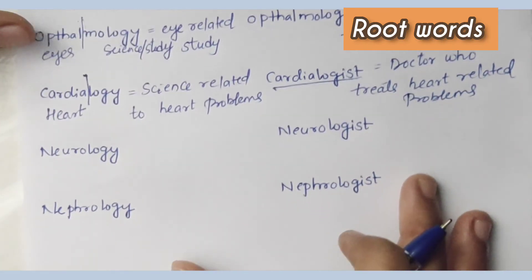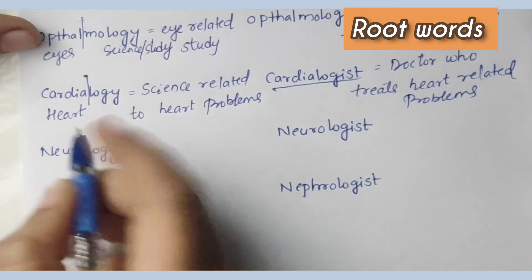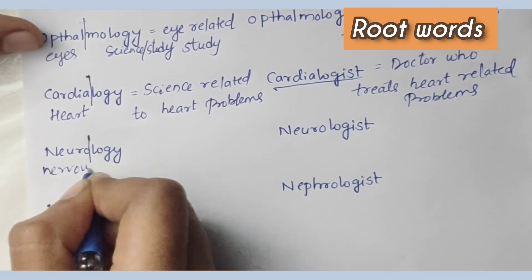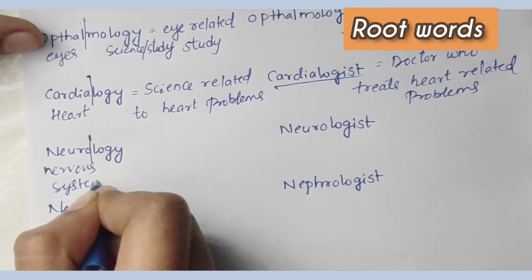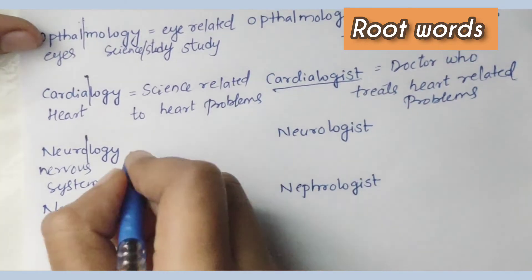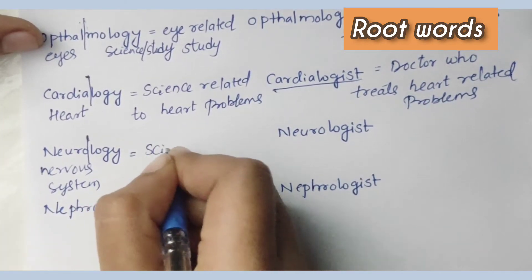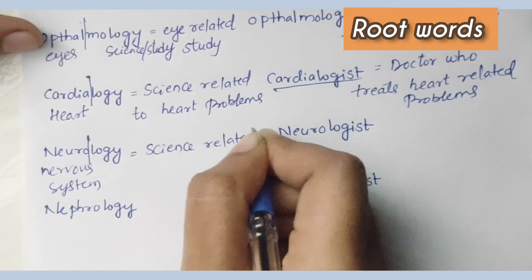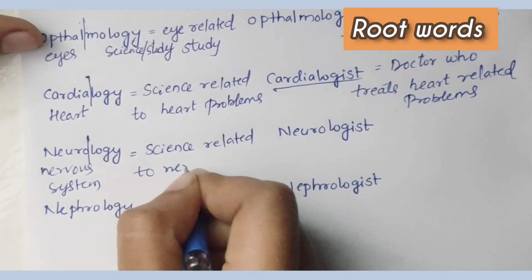Neurology: 'neuro' means nervous system, '-logy' means science or study. So neurology is the science related to the nervous system.